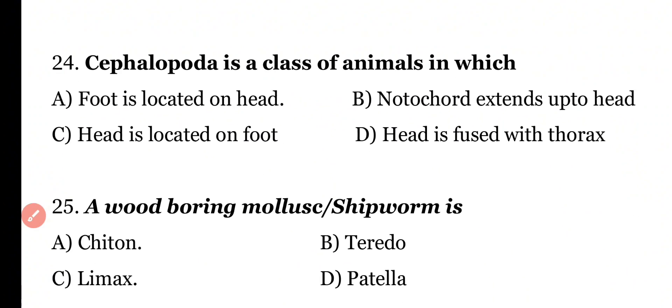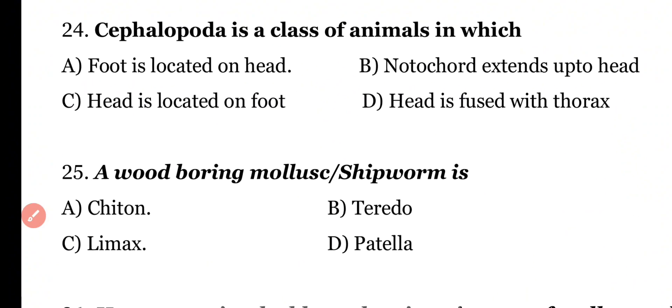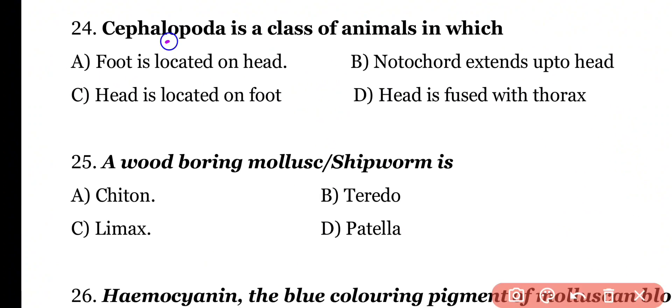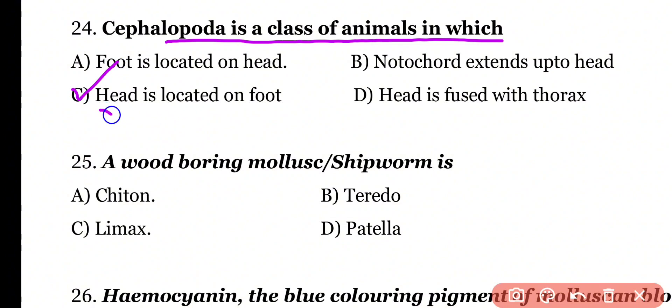Question number 24: Cephalopoda is a class of animals in which the foot is located on the head. Options: foot located on head, notochord extends to head, head located on foot, head is fused with thorax. Correct answer is option C. In class Cephalopoda, the head is located on the foot, and the foot is funnel-like in structure.